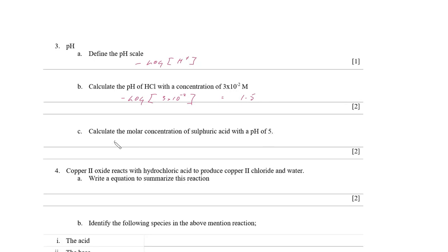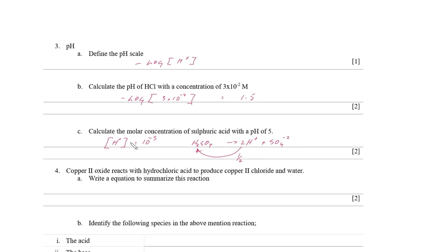To calculate the molar concentration of sulfuric acid with a pH of 5: the hydrogen ion concentration equals 10⁻⁵ M — the inverse of the log. The trick is that sulfuric acid ionizes to release two hydrogen ions and one sulfate ion, so the ratio is 1:2. The actual acid concentration is 10⁻⁵ divided by 2, which equals 5×10⁻⁶ mol/L.